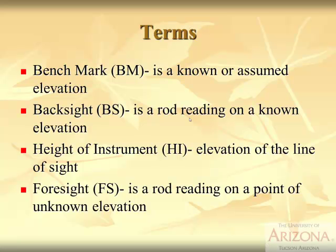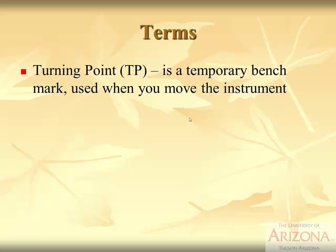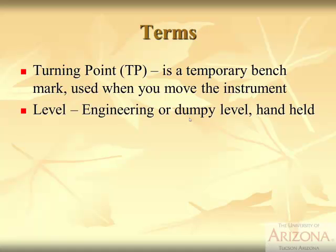In an extended survey, we start with a backsight on a known elevation, take a foresight on an unknown elevation, then use a turning point — a temporary benchmark used when moving the instrument. After moving the instrument, we shoot back on that turning point. The tools we use are typically an engineering or dumpy level. Dumpy levels were common years ago, nearly two feet long; nowadays we mostly use engineering levels, and electronic measuring devices are also available.